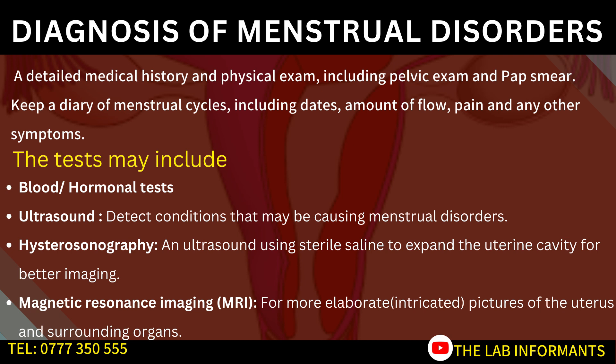When it comes to diagnosis of menstrual disorders, this starts with detailed medical history taking and physical examination, including pelvic examinations and a Pap smear. When you visit your gynecologist, the doctor will examine you and may order a Pap smear, where a sample from your cervical area is sent to the lab and examined by a pathologist for abnormalities. In many cases, you may also be asked to keep a diary of your menstrual cycles, recording the dates, amount of flow, pain, or any other symptoms.